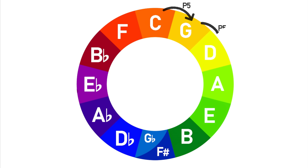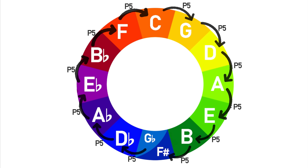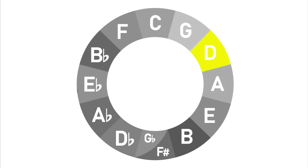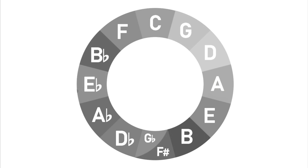So basically, if a chord progression moves by step around the circle of fifths, it's going to have that satisfying sense of each chord being related to the next — it sounds like it all fits together. And inversely, if you jump around the circle of fifths at random, you'll wind up with some chord changes that sound very unrelated and chaotic.